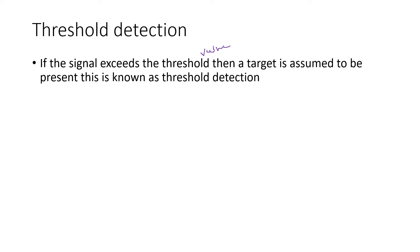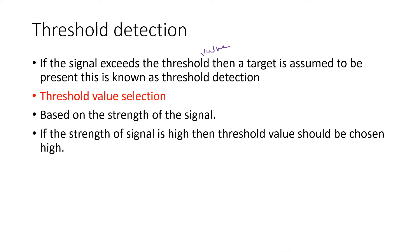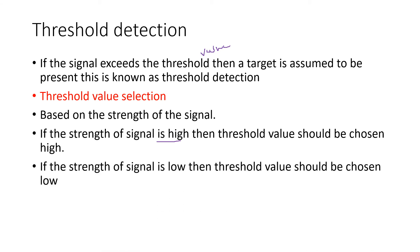It depends on the strength of the signal. Based on the strength of the signal, we always select the threshold value. If the strength of the signal is very high, then the threshold value should be chosen high. If the strength of the signal is low, then the threshold value should be chosen low.